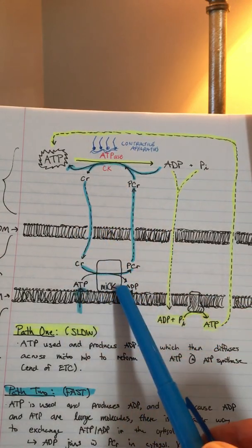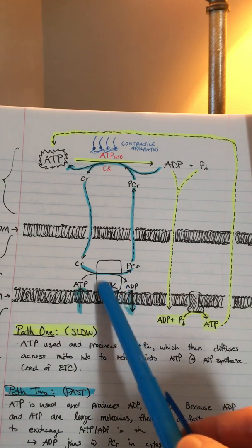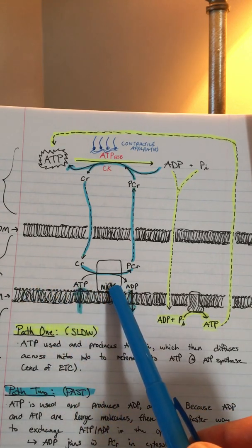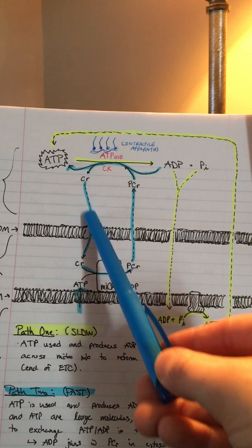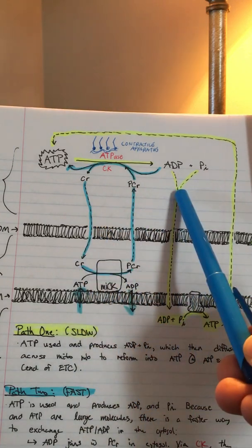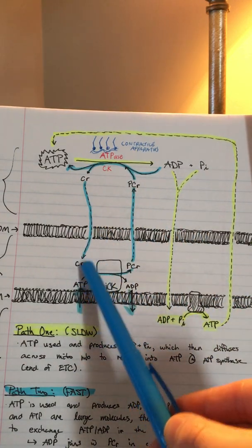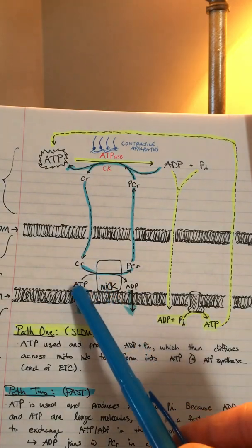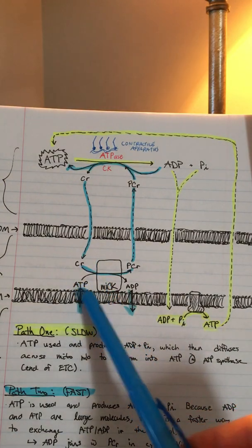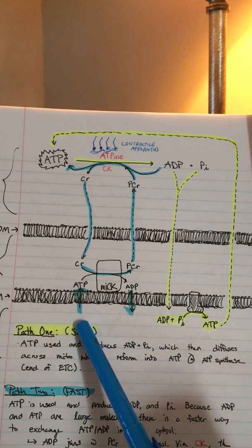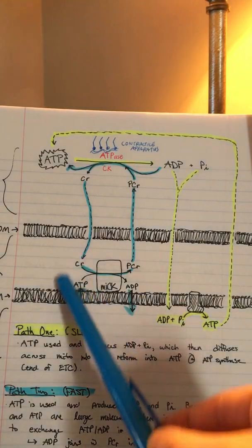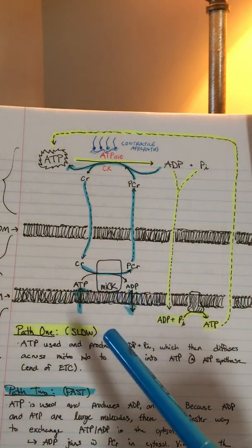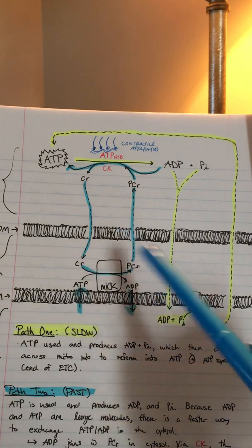It'll move through the outer membrane because mitochondrial creatine kinase is within the intermembrane space. Creatine, after giving its phosphate to ADP, is now in the mitochondrial intermembrane space and it's going to interact with an ATP that was created in the matrix but diffused up one membrane, the inner mitochondrial membrane, rather than both.